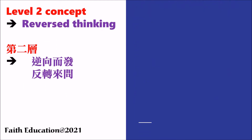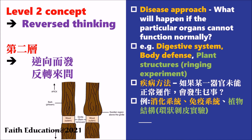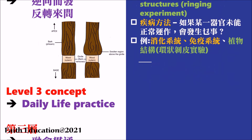The Level 2 concept involves reversed thinking, which I always call the disease approach in lessons. We do not directly ask you the function of a particular organ, but instead ask what will happen if that organ cannot function normally. Across different topics — the digestive system, body defense, and plant structures — you can recall the concept of the ringing experiment, where we remove the phloem vessels in the bark and ask what will happen to the plant.